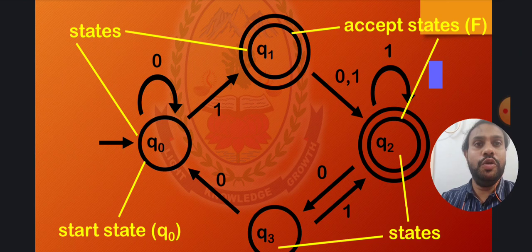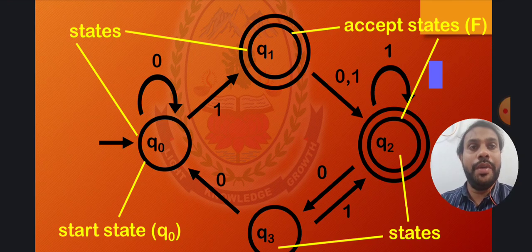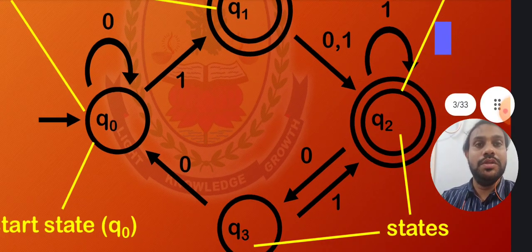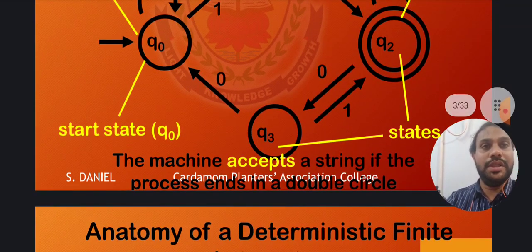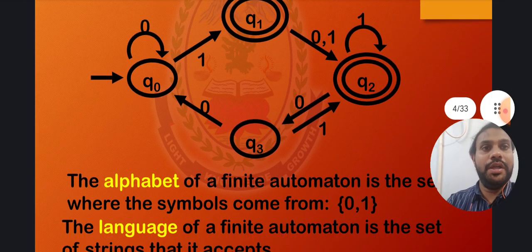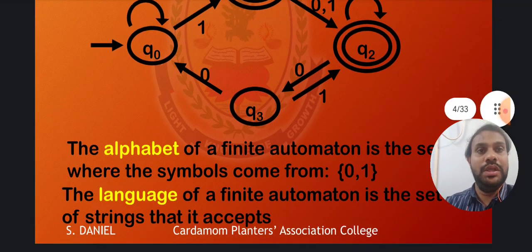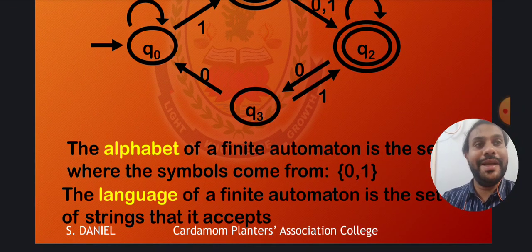Q0 has a self-loop with input 0, so the transition from Q0 to Q0 itself has the input symbol 0, meaning it can take any number of zeros. Once we go from Q0 to Q1 by taking input symbol 1, the output will be any number of zeros followed by 1. The machine that accepts strings through this process is called the DFA. The alphabet of a finite automaton is the set of all symbols — here, 0 and 1. The language of a finite automaton is the set of strings accepted by the automaton.